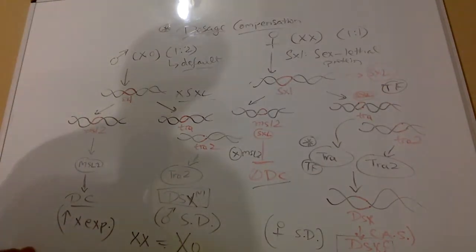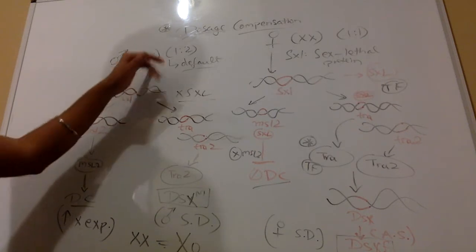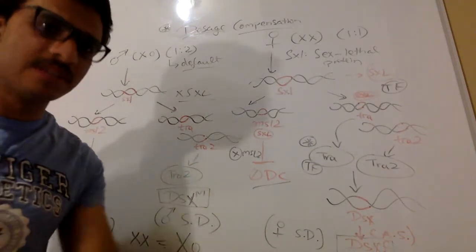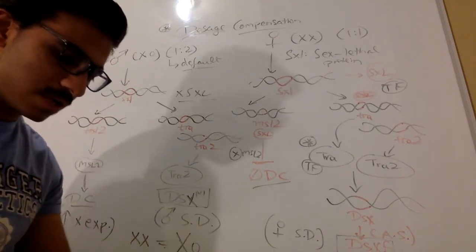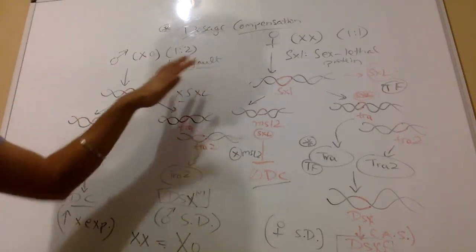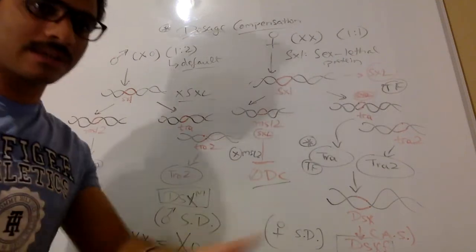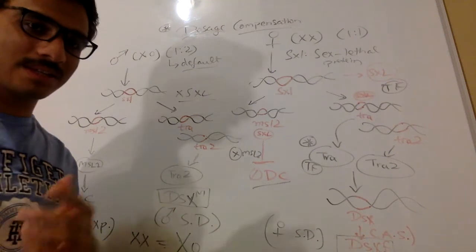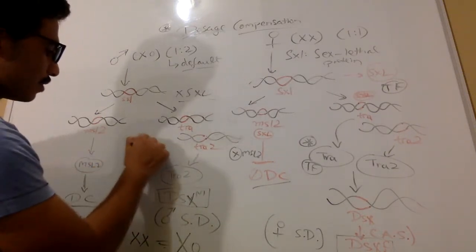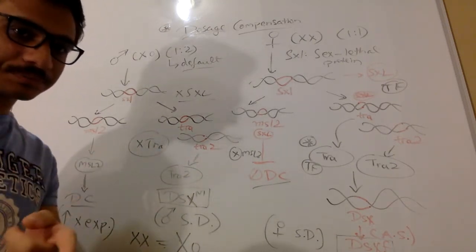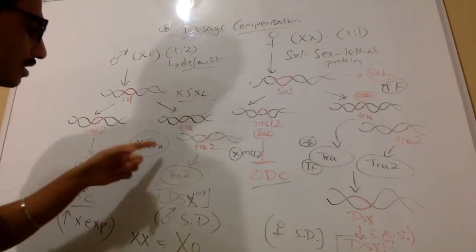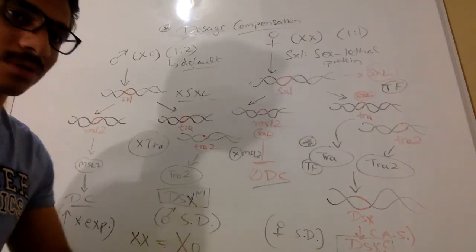In males we have a different scenario. There is no expression of the SXL gene — I'll explain this in the sex determination video. There is a gene called the sisterless gene, and in males we have a different protein product from sisterless genes. Because of that, we don't produce any SXL protein or sex lethal protein in males. Since we don't have any sex lethal protein, we won't have any expression of the TRA gene, and there is no TRA protein. As a result, we don't induce the expression of DSX or double sex gene in males.